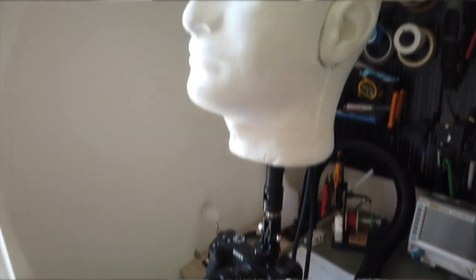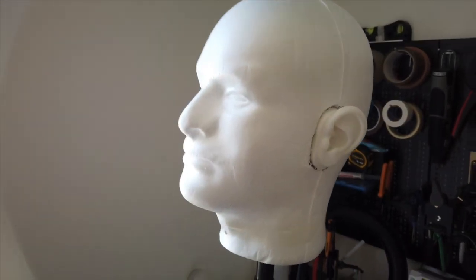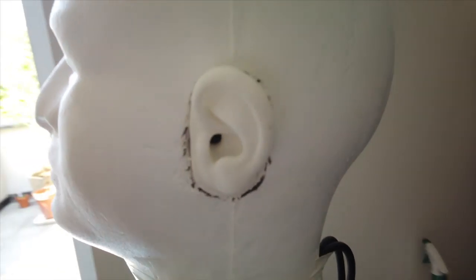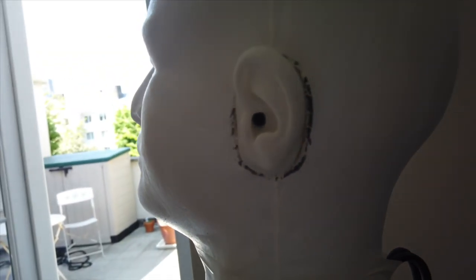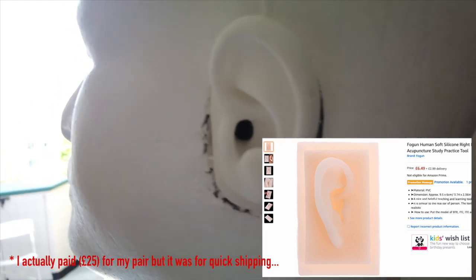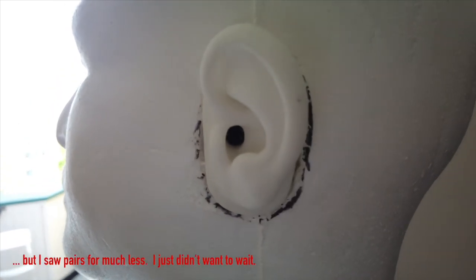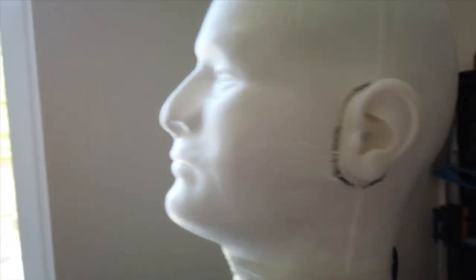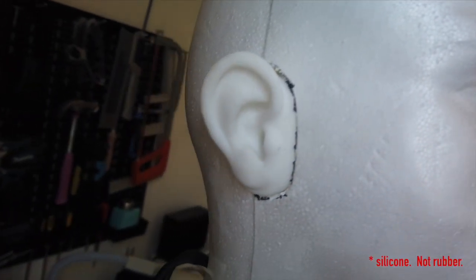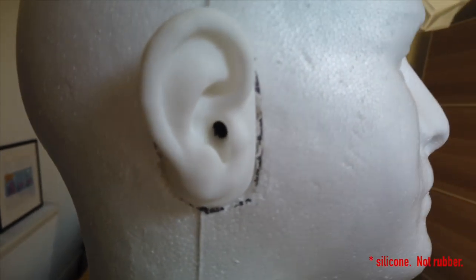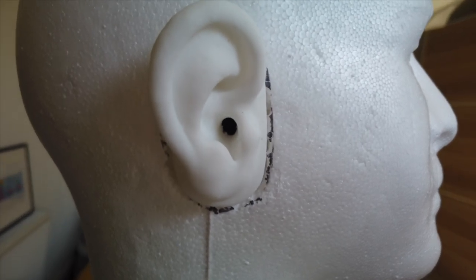The head is made out of styrofoam. Turns out a lot of people buy these for making wigs and hats and crocheting and other things of that sort. The ears are actually made out of rubber. I thought these were going to have to get 3D printed out of silicone rubber or something, or I'd have to make a cast out of my own ear. And mercifully, I did not have to do anything like that. These are just rubber ears that you can buy on Amazon. They're popular with medical students and also with people getting into acupuncture.